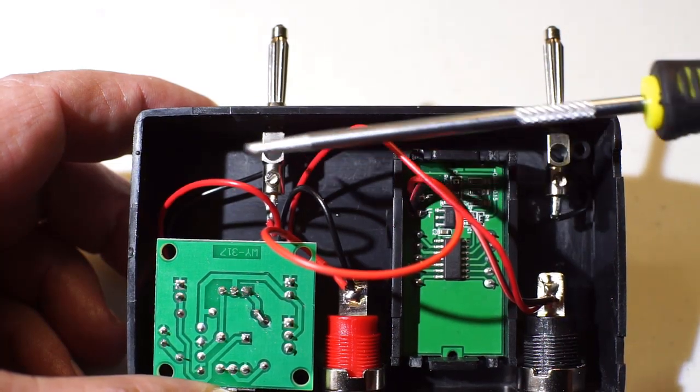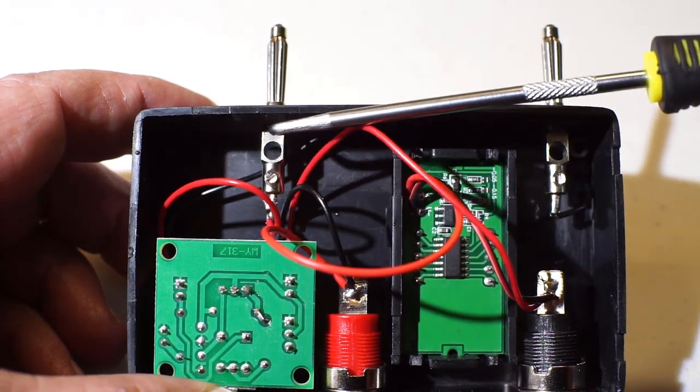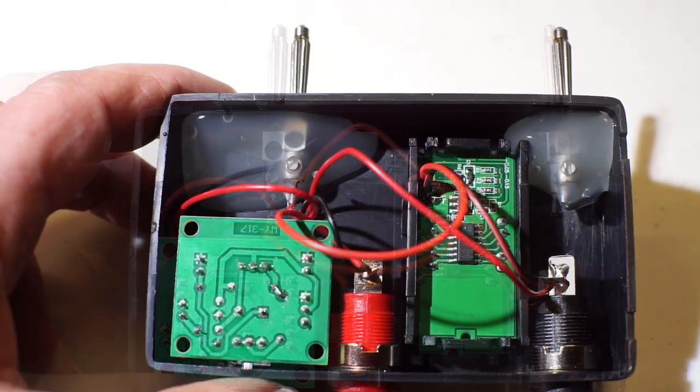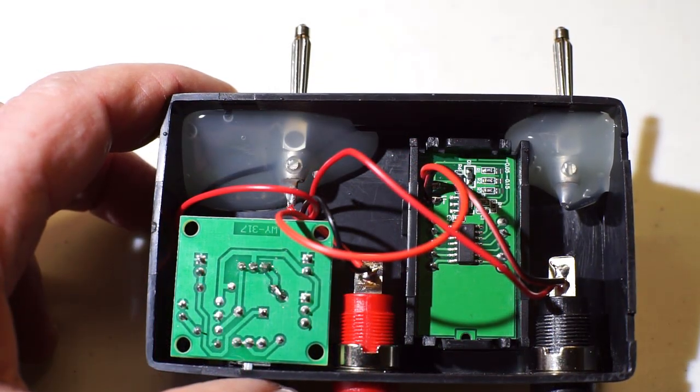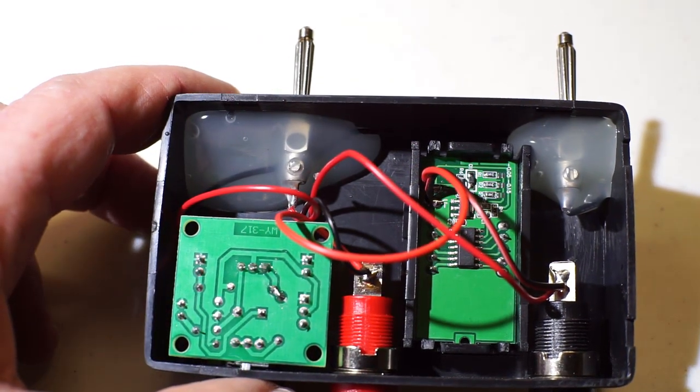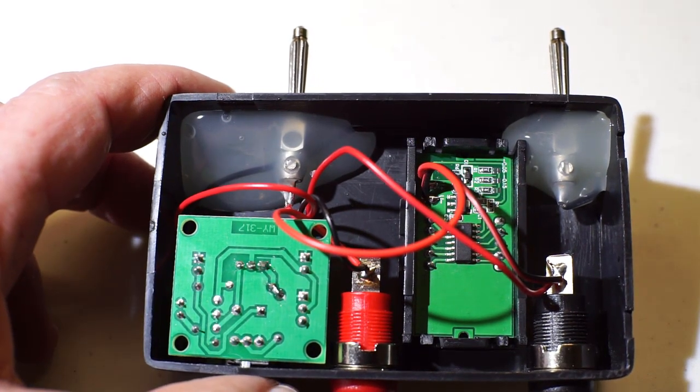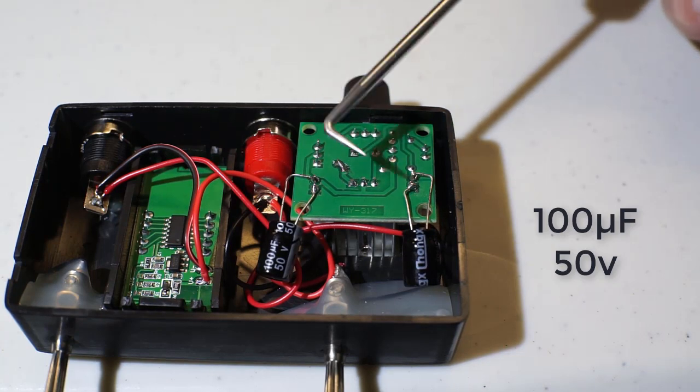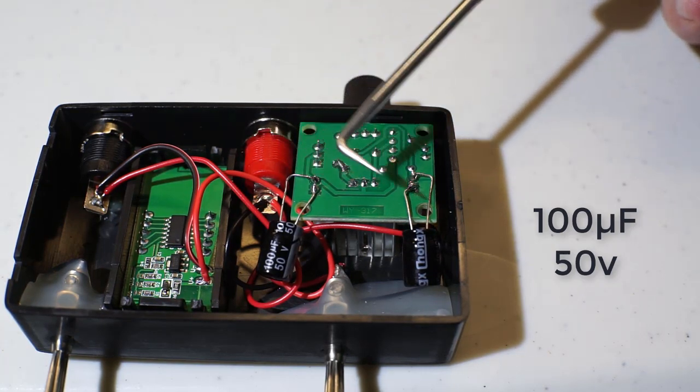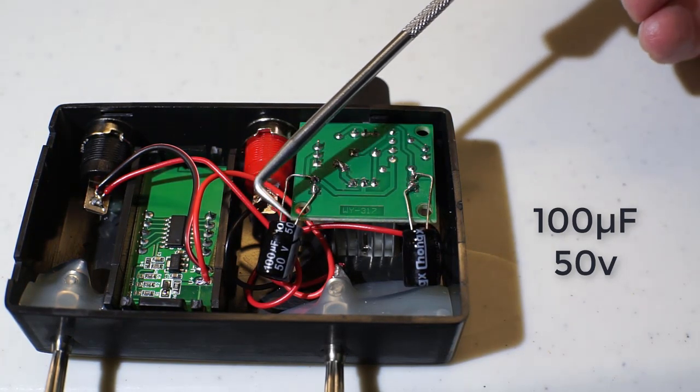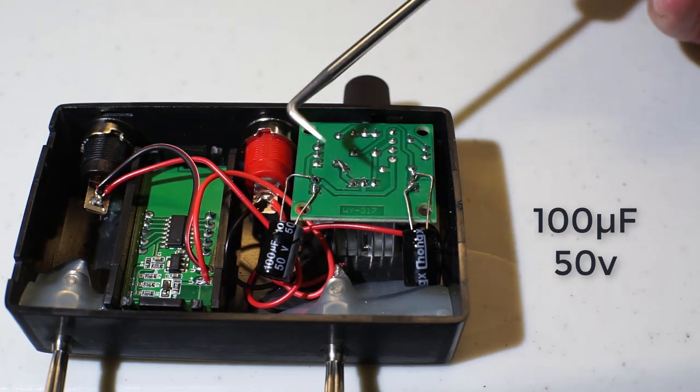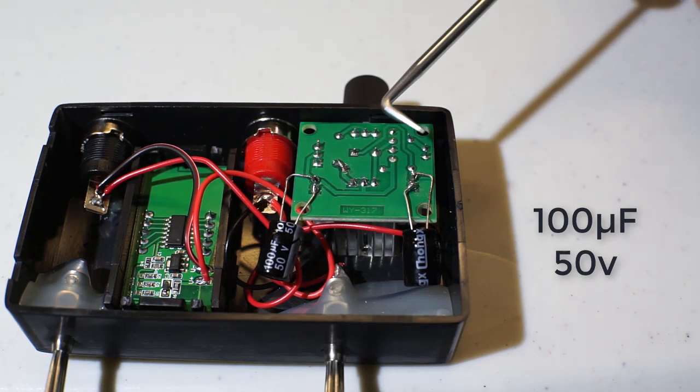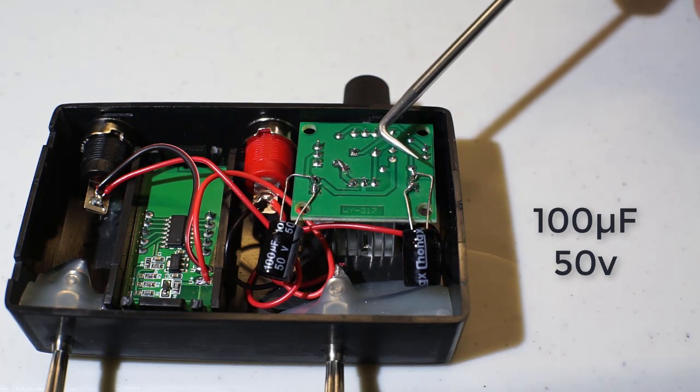These banana plugs come up against the shoulder so that they can't pull out, but we're going to have to secure them to make sure that they can't be pushed in. The surface was roughed up and a generous amount of hot glue was put on. Those banana plugs are very secure now. On testing it was found that this thing needed more capacitance. I added these two 100 microfarad 50 volt electrolytics, one here on the input pins.